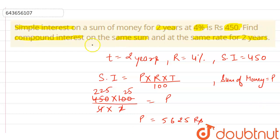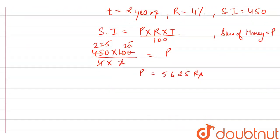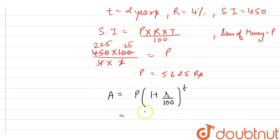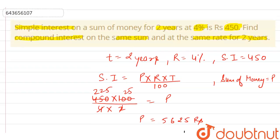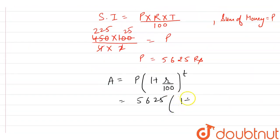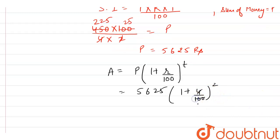The question asks us to find compound interest on the same sum, which is 5625 rupees. We know the amount in compound interest is A equals P into (1 plus R by 100) whole raised to the power T, where T is time, R is rate, and P is the principal amount. So A equals 5625 into (1 plus 4 by 100) raised to power 2. Solving: 4 cancels with 25, giving 5625 into (26 by 25) whole squared.